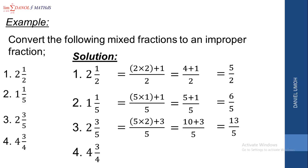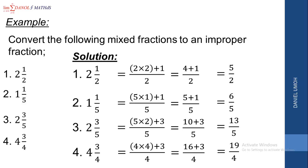Let's look at the last example: 4 whole number 3 over 4. We multiply the denominator by the whole number: 4 times 4 is 16. Then we add plus 3, which gives us 19. So 4 times 4 plus 3 over the original 4 gives us 16 plus 3 over 4, which is 19 over 4. This is how to convert from a mixed fraction to an improper fraction.